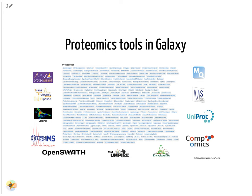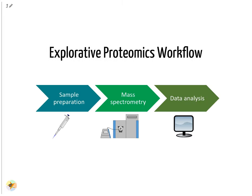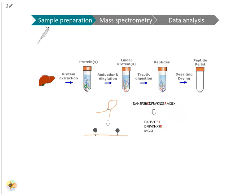The Galaxy proteomics tools and training materials are constantly expanding and improving. This presentation will focus on explorative proteomics via the traditional DDA approach. Proteomics experiments consist of three main steps: the sample is prepared for the analysis in the MS, then the sample is measured in the MS, and last, the obtained data is analyzed. Typical sample preparation steps include protein extraction, reduction and alkylation, tryptic digestion and desalting.